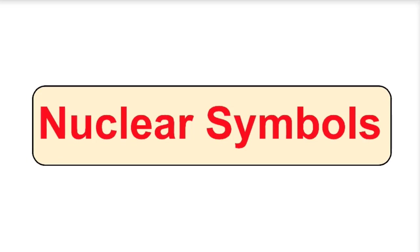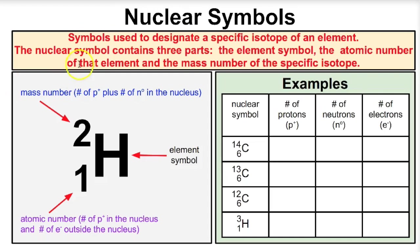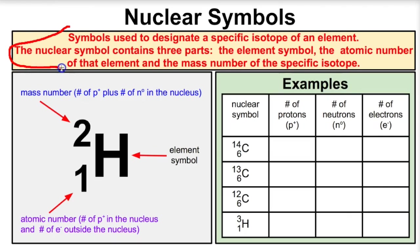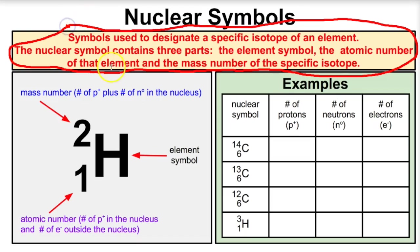Hey you guys, this is Mr. Millings and today we're going to learn about nuclear symbols. What are nuclear symbols? Nuclear symbols are used to designate a specific isotope of an element. We're going to talk about isotopes in a different video, but for now just understand that we use nuclear symbols when we want to specify a specific type of isotope.